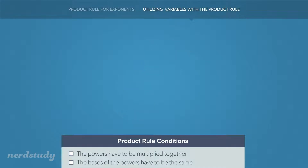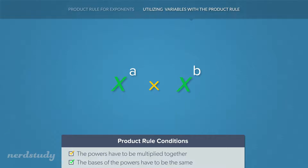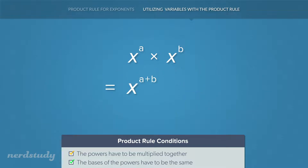Now let's look at a general example. Here we have x to the exponent a multiplied by x to the exponent b. We think to ourselves about the two conditions: are the two powers being multiplied together? Yes. And are the bases of the two powers the same? The answer is also yes. So in this case all we have to do is add the two exponents together. What we get is x to the exponent a plus b.